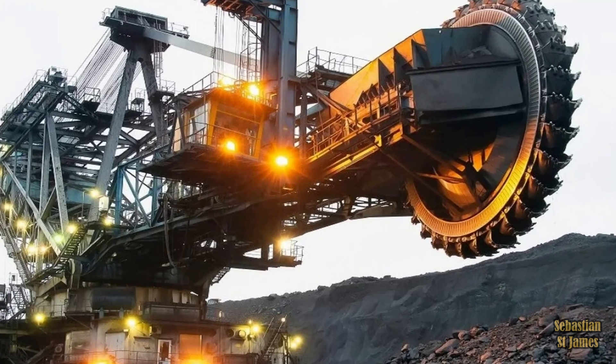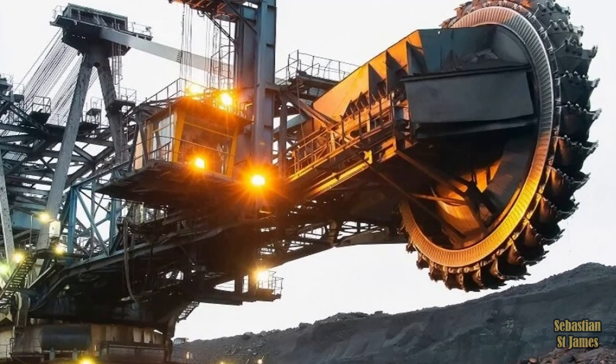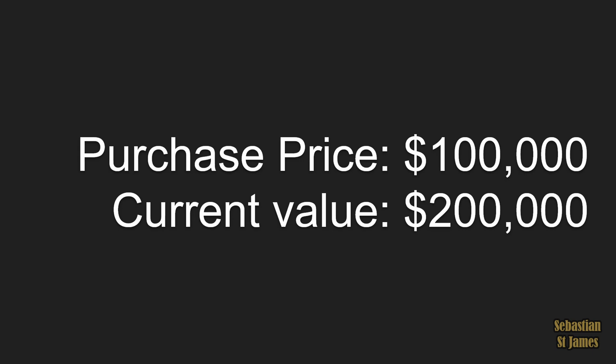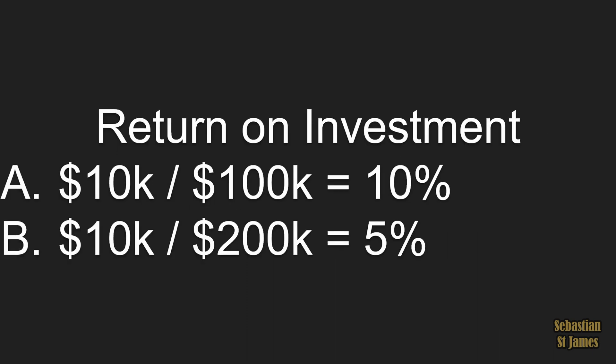Here's a second story. You buy shares in a mining company. 10 years ago, you purchased them for $100,000. The current value is $200,000 today. You're paid a dividend of $10,000 per year. Your return on investment is either A: $10,000 — the dividend — divided by $100,000, the original purchase price, which equals 10%. Or B: